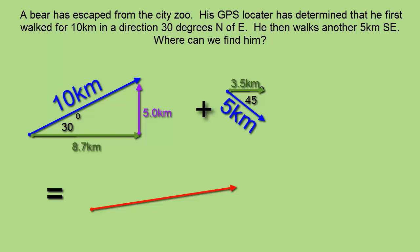If you look at our 5 kilometer vector, we've broken that one down as well into two 3.5 kilometer vectors, one towards the east and one towards the south.